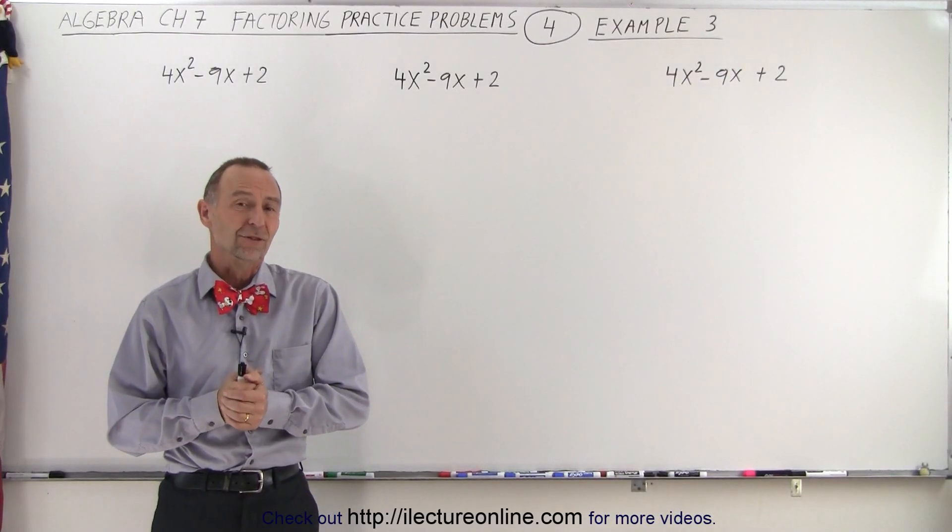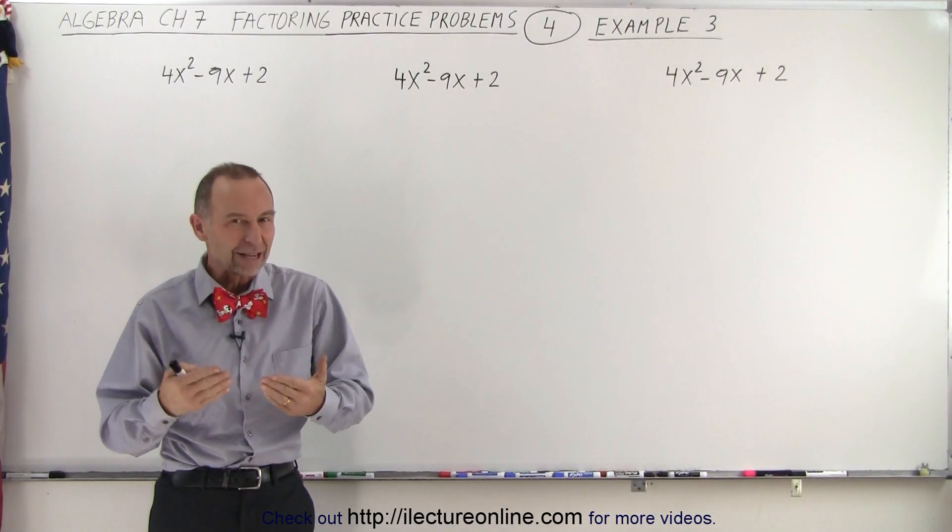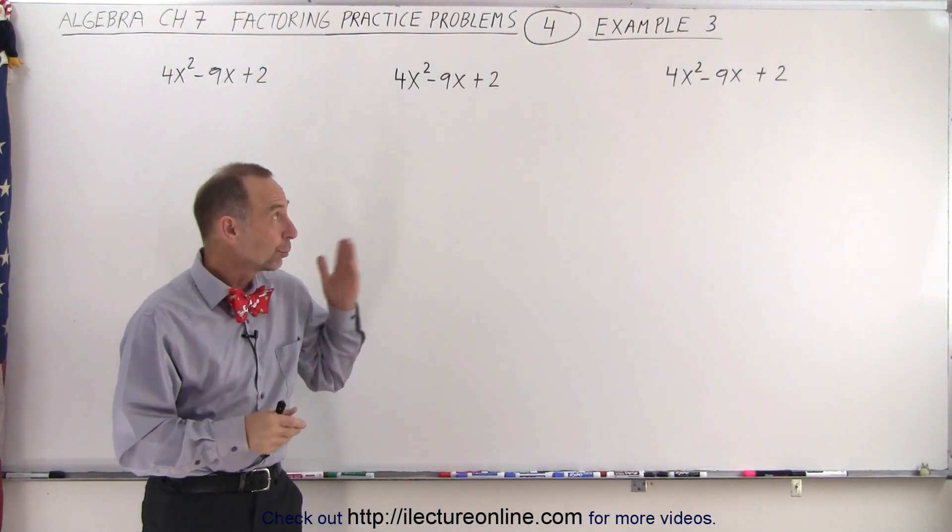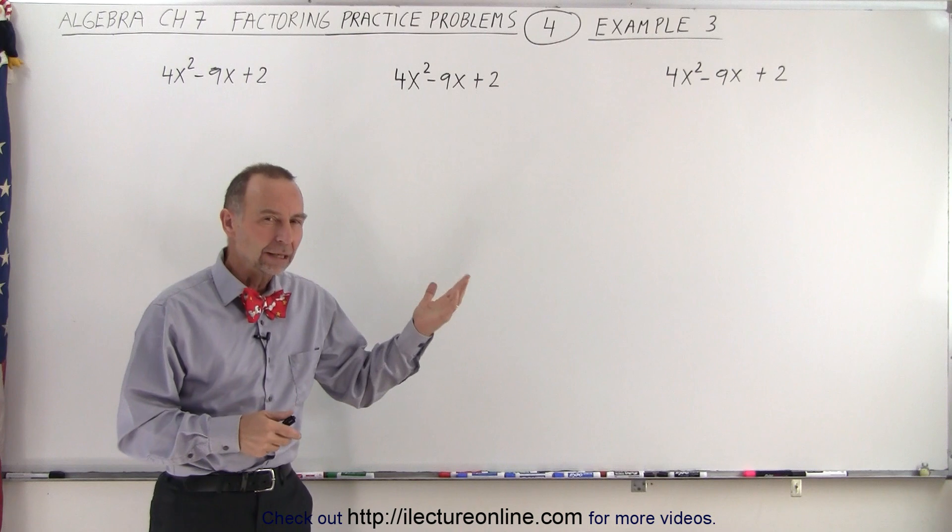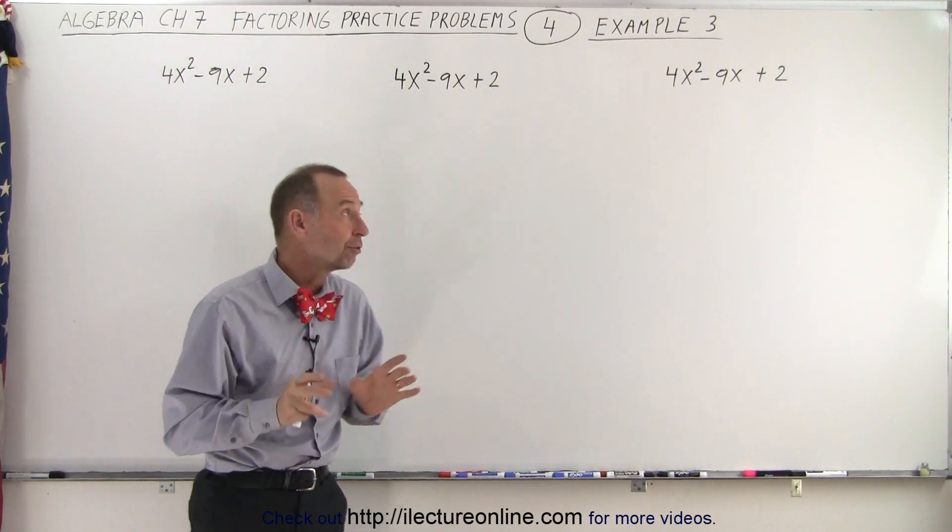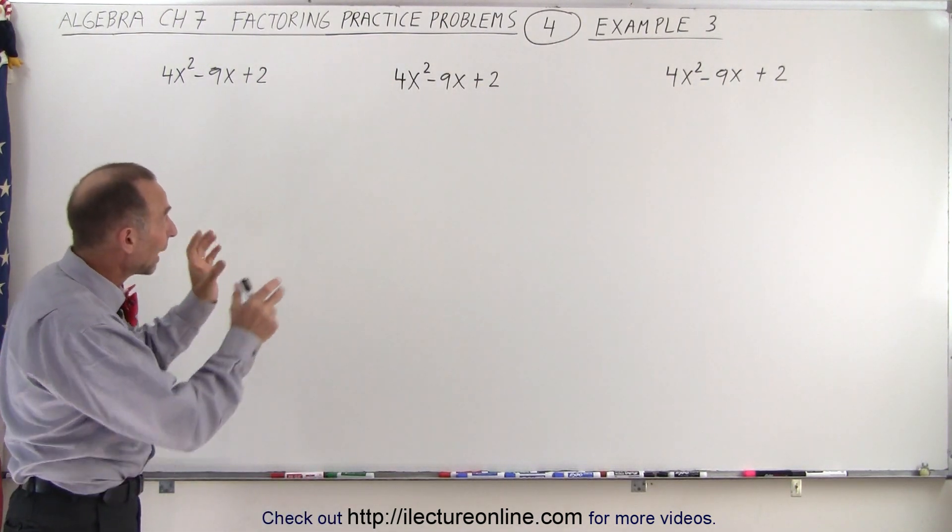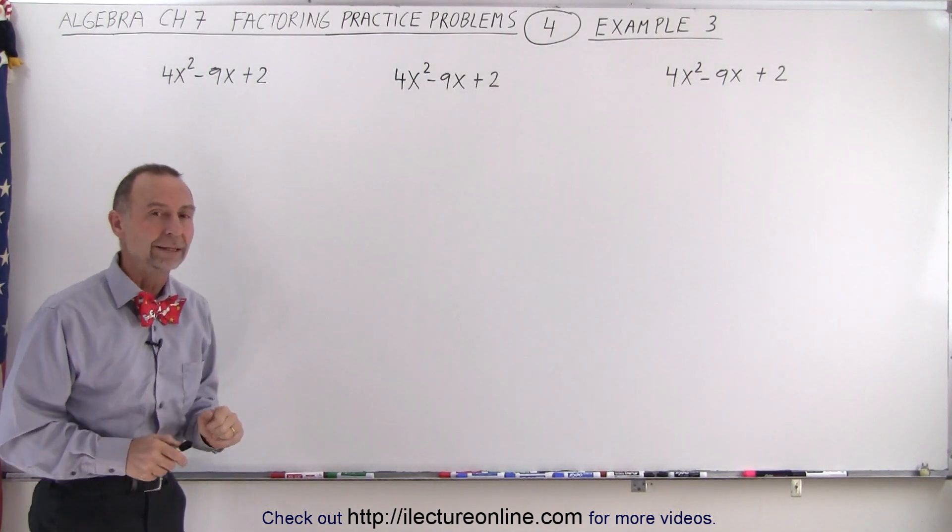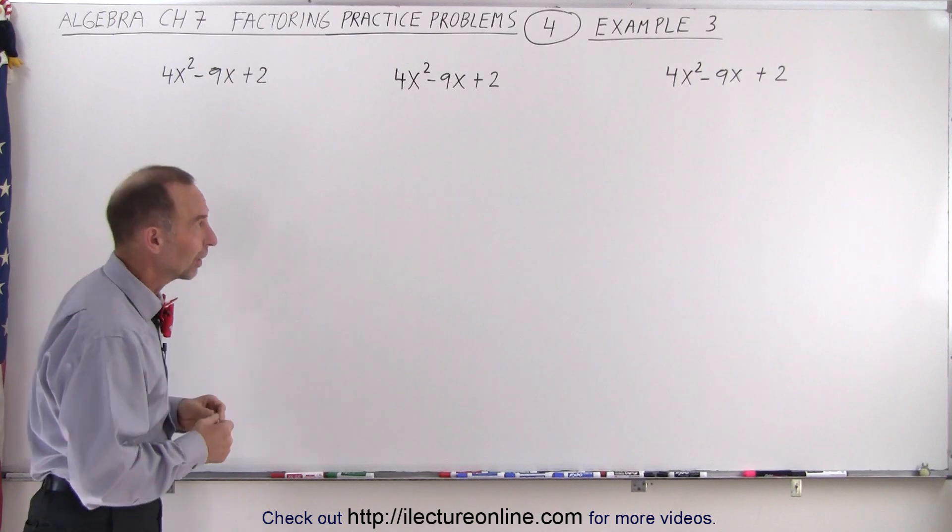Welcome to my lecture online. Here's another example where we're going to factor the same polynomial in three different ways. We're going to brute force it, then use the product and sum method by writing it as four terms and grouping two terms, and then we're going to use the FOIL method. Let's see which method you like best.